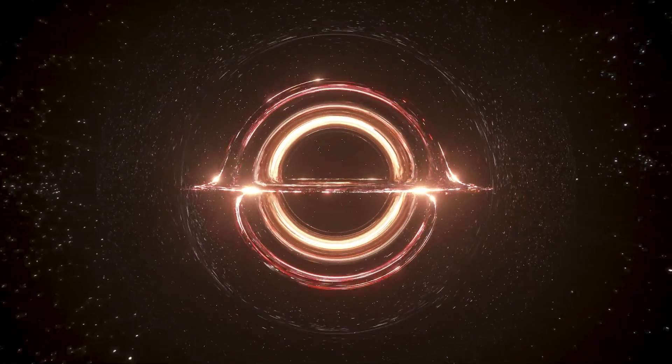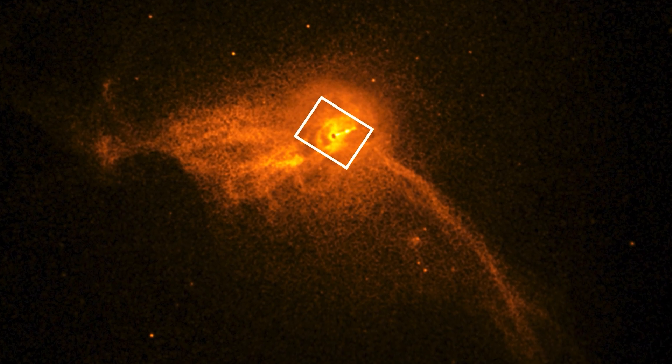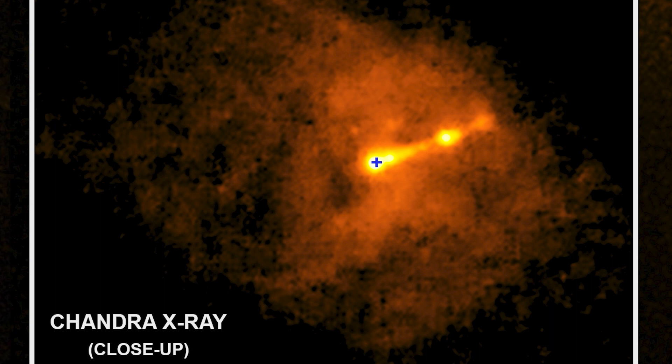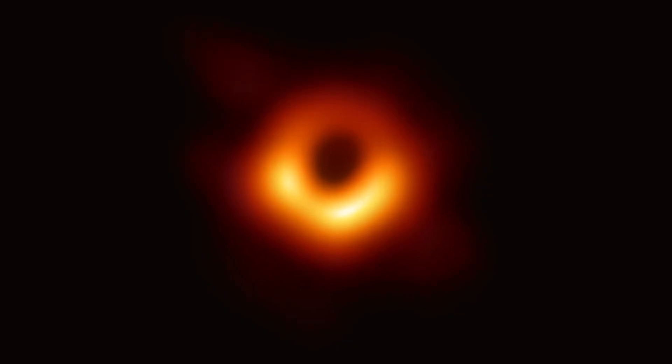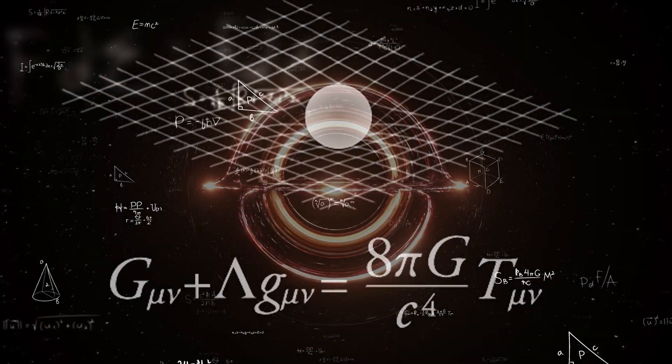It was first shown that black holes exist about 100 years ago, but it wasn't until 2019 that scientists were able to actually take a picture of a black hole for the first time. What I'm trying to say is that one of the answers to these field equations is that black holes exist.